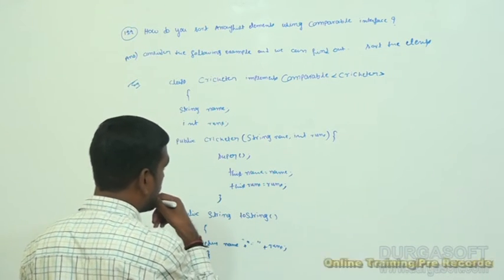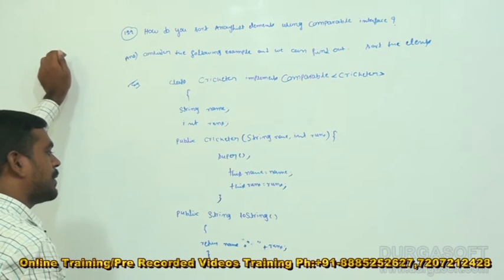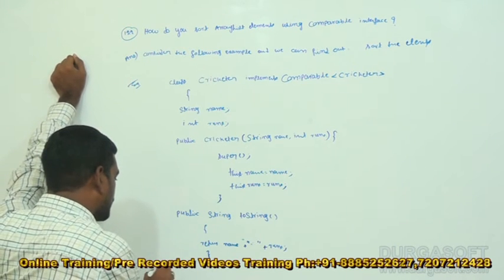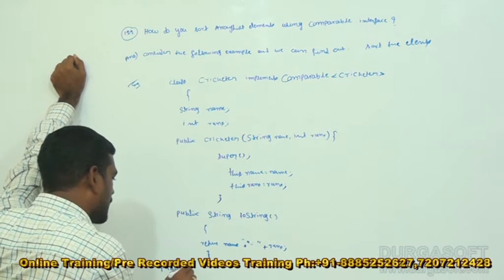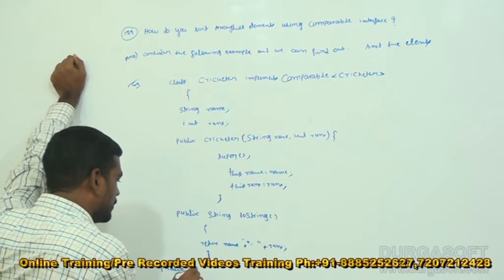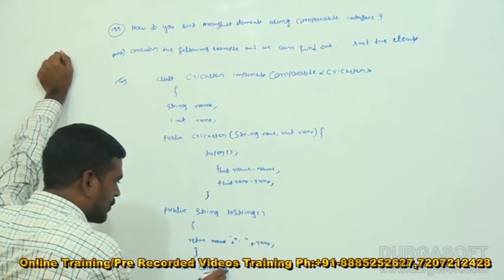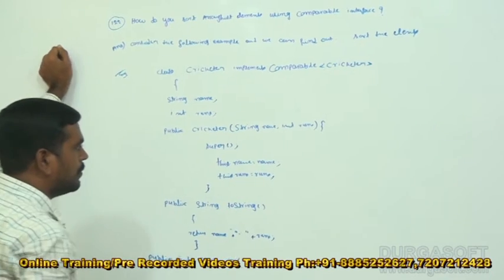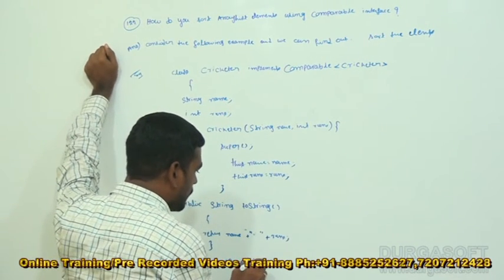After that, the Comparable interface provides one predefined method, that is compareTo. We can use that method: public int compareTo, with parameter Cricketer that.